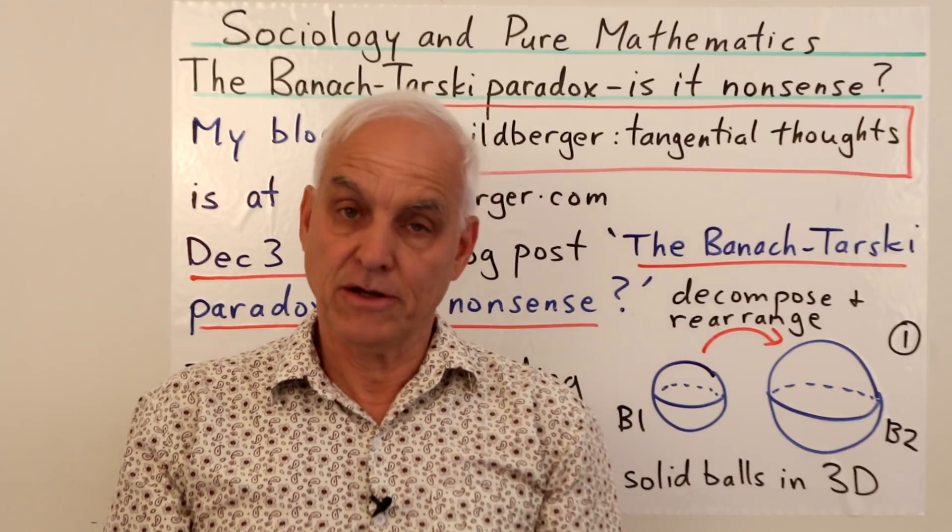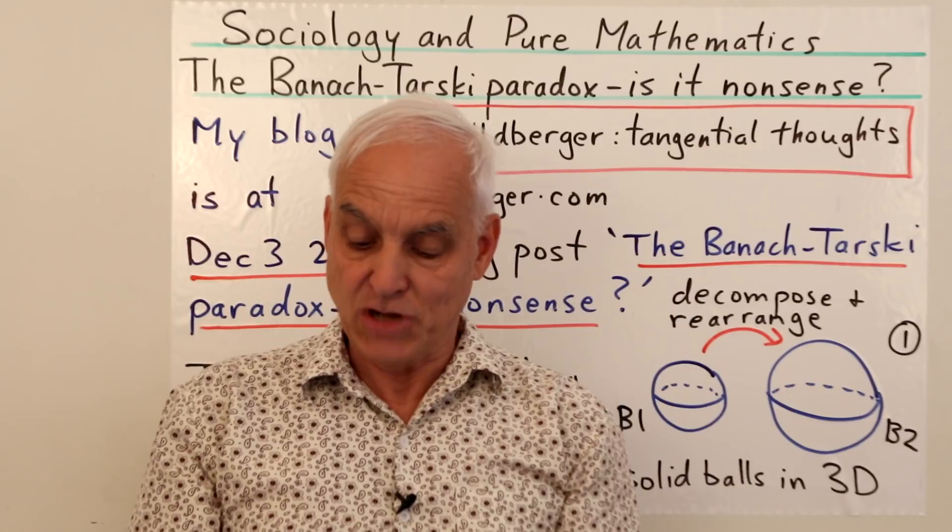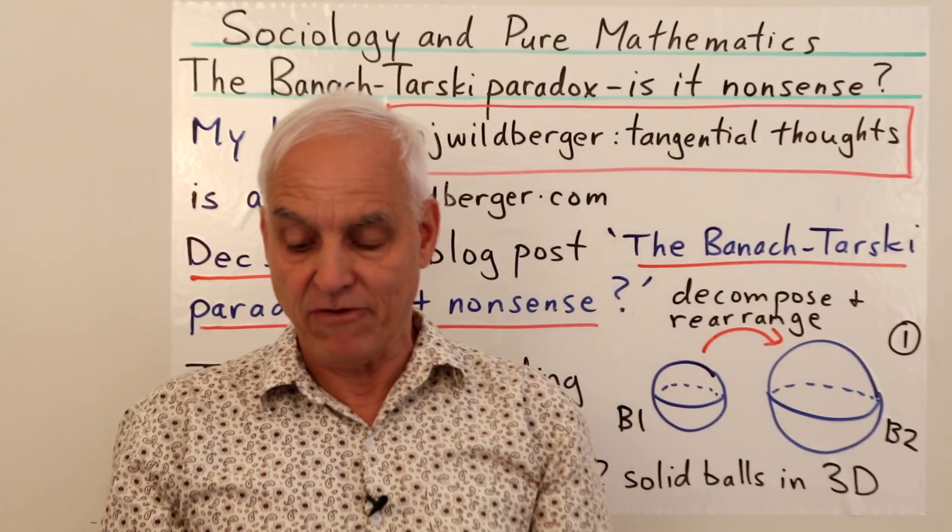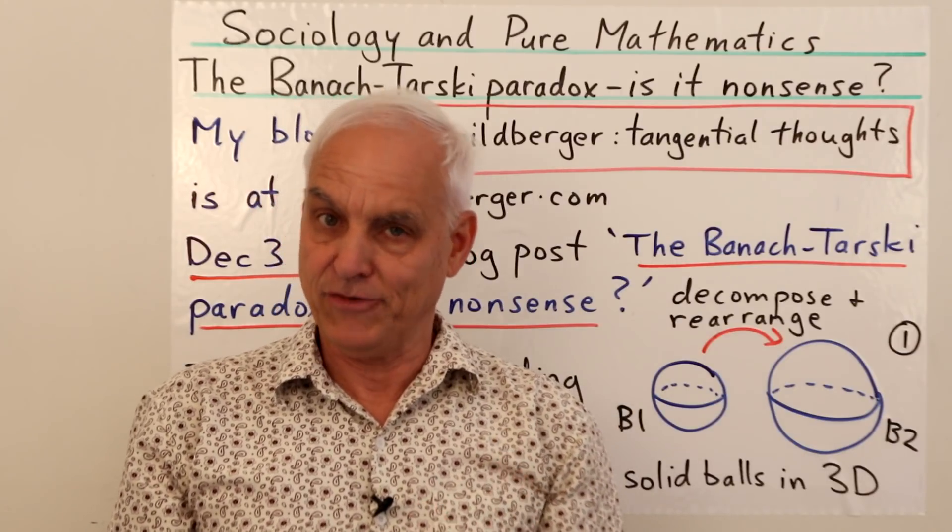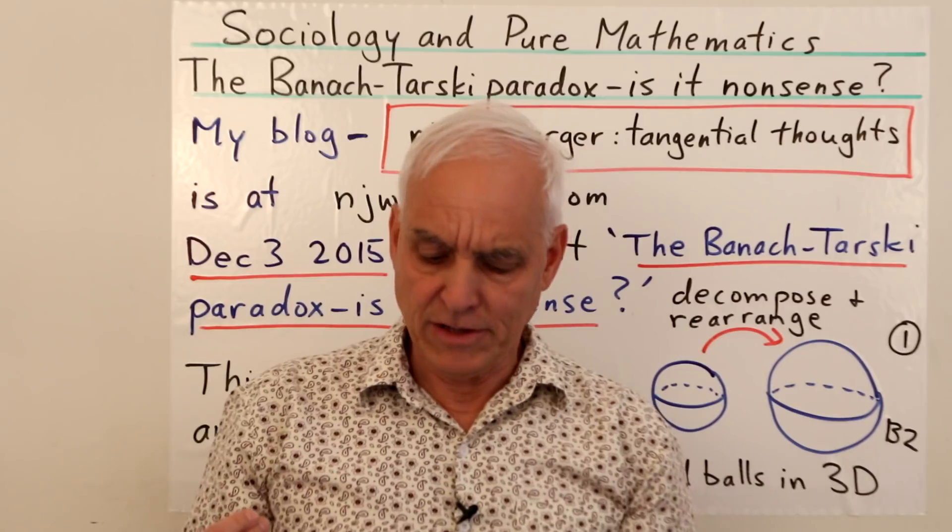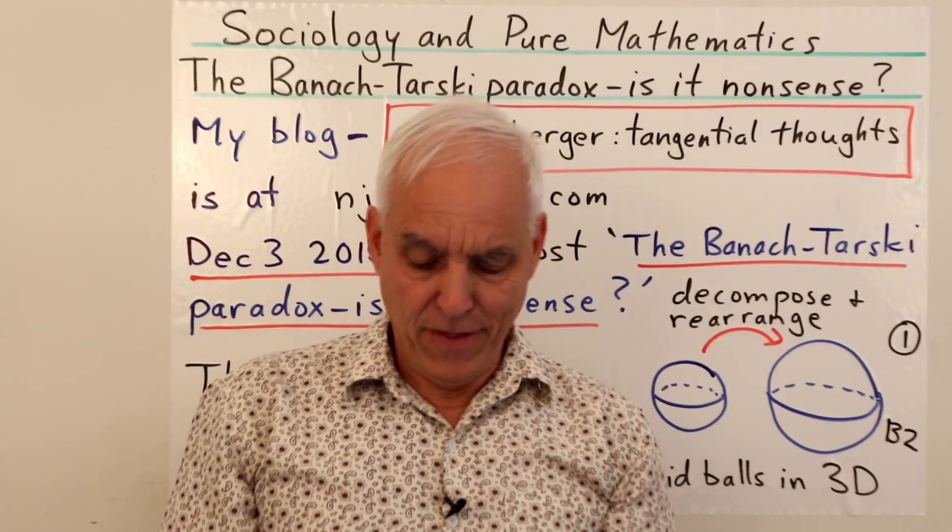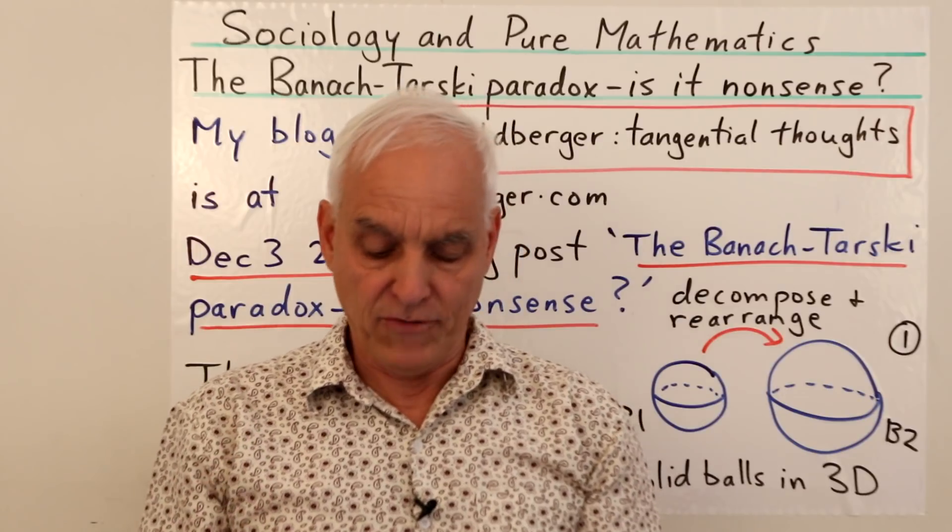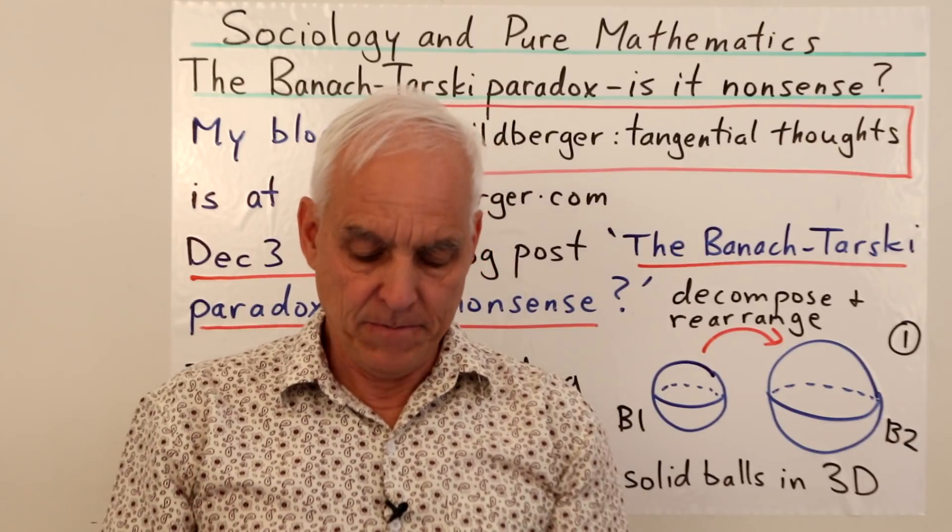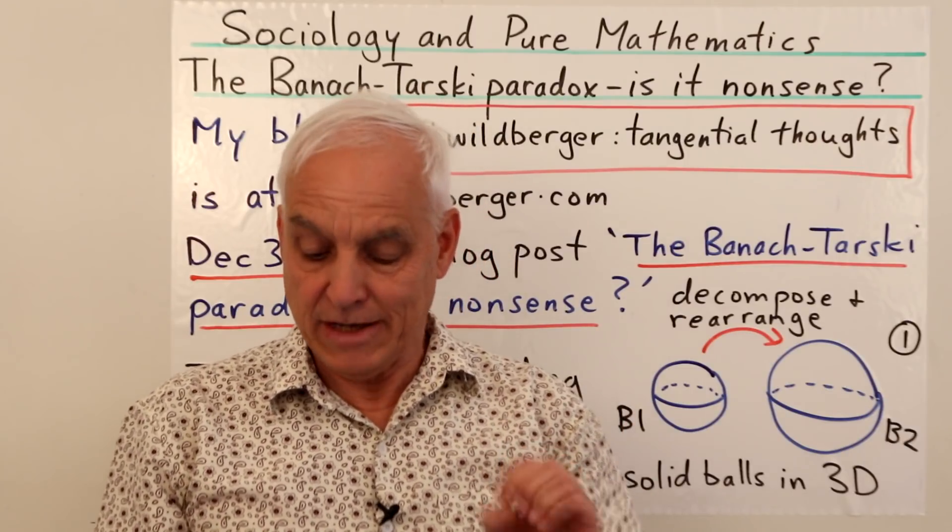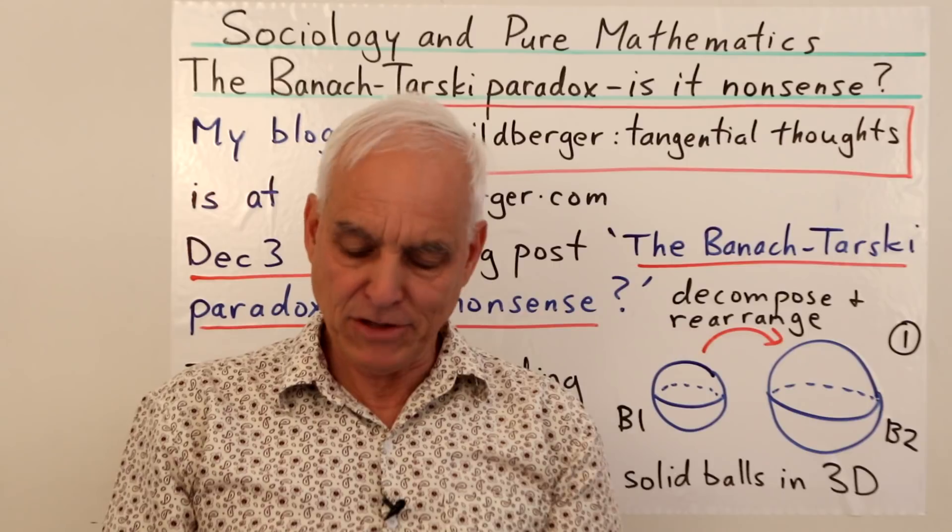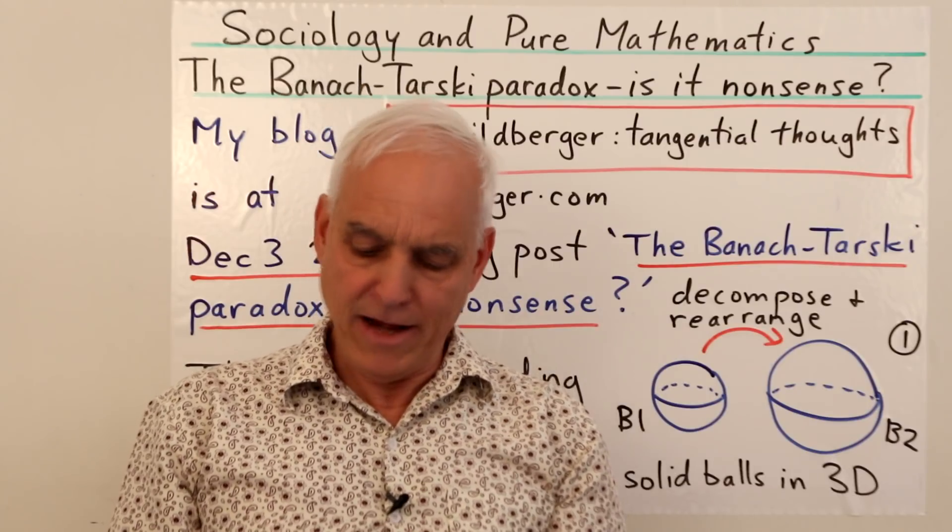This theorem contradicts common sense. In real life we know that it is not easy to get something from nothing. We cannot take one dollar, subtly rearrange it in some clever fashion, and end up with two dollars. It doesn't work. That is why most ordinary people, when they hear about this kind of result, are at first disbelieving, and then when told the proof involves free groups of rotations and the axiom of choice, and that the resulting sets are in fact impossible to write down explicitly, just shake their heads.